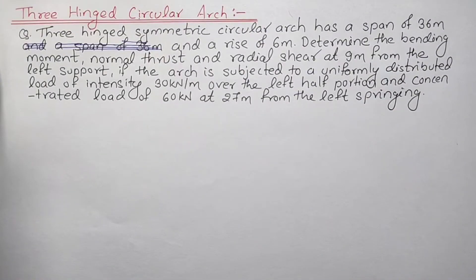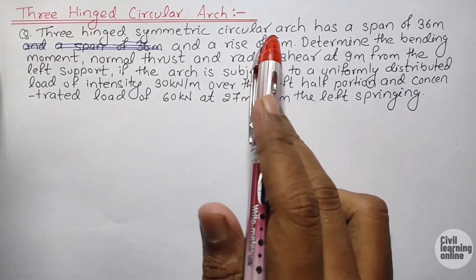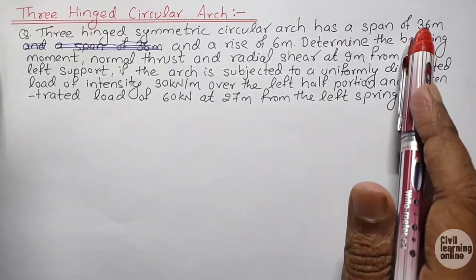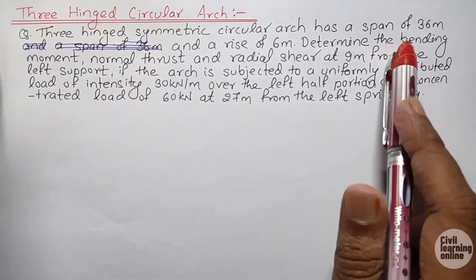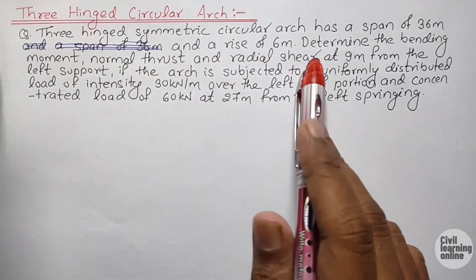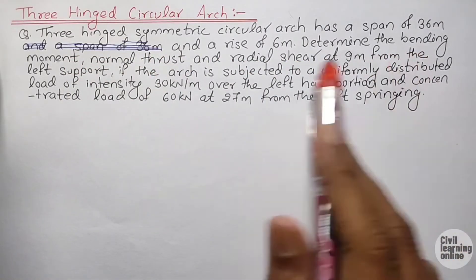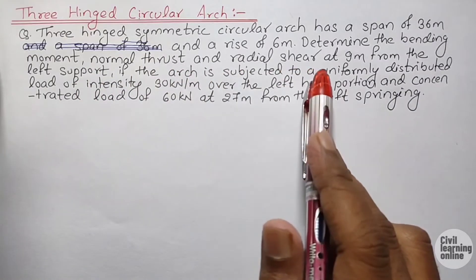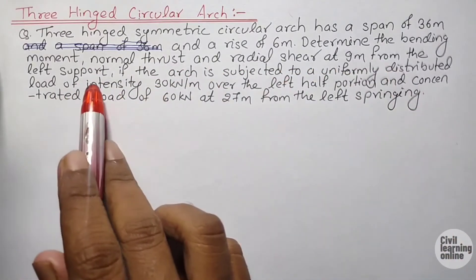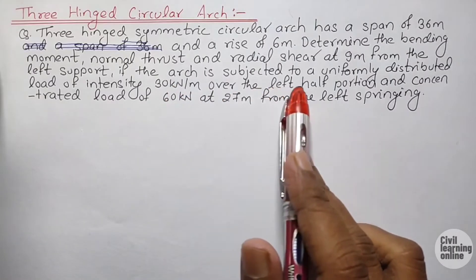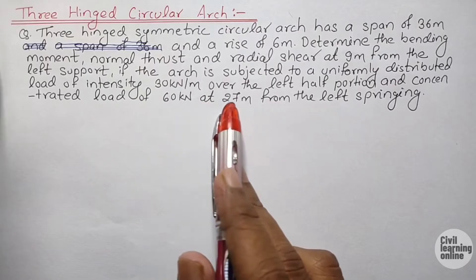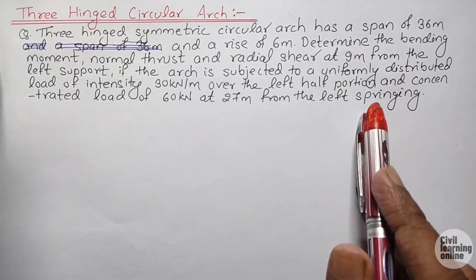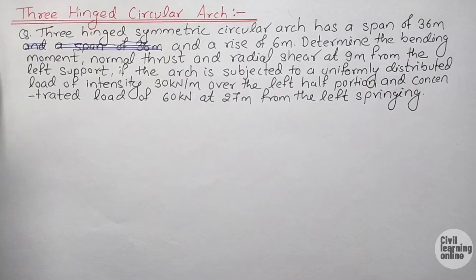Let's begin by reading out the question. A 3-hinged symmetric circular arch has a span of 36 meters and a rise of 6 meters. We are asked to determine the bending moment, normal thrust, and radial shear at 9 meters from the left support, if the arch is subjected to a uniformly distributed load of intensity 30 kN/m over the left half portion and a concentrated load of 60 kN at 27 meters from the left springing.